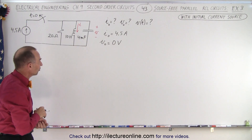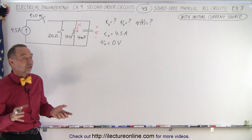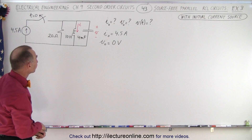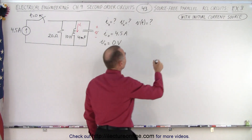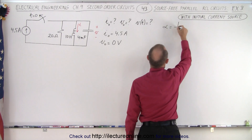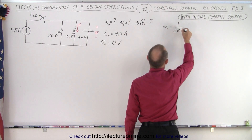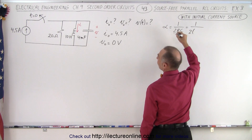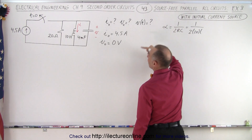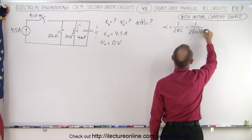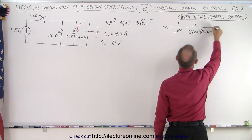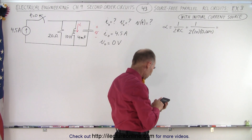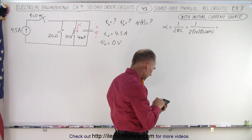Now we have the initial conditions. Let's determine whether this is an overdamped, critically damped, or underdamped system. We need to find alpha, where alpha equals 1 over 2RC. That's 1 over 2 times 20 ohms times 4 millifarads (0.004). So we have 1 over (80 × 0.004) — take the inverse of that to get alpha.